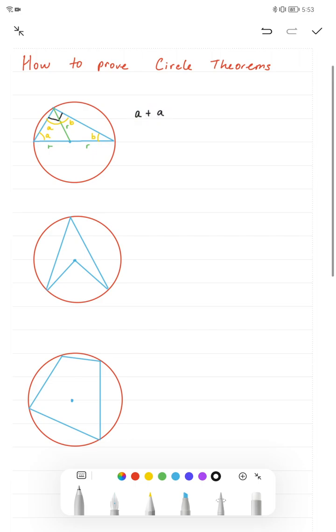So I know A plus A plus B plus B equals 180 degrees, which means 2A plus 2B equals 180 degrees. I can factorise out the 2, so we get 2 times A plus B is 180, which means A plus B must equal 90. And as we can see over here, this angle is A plus B.